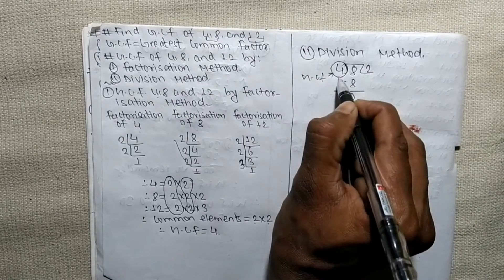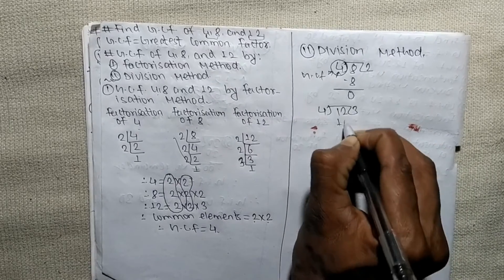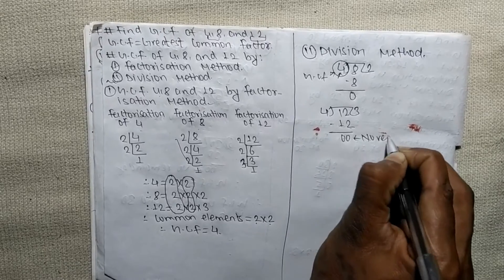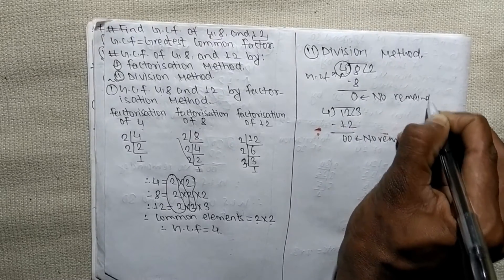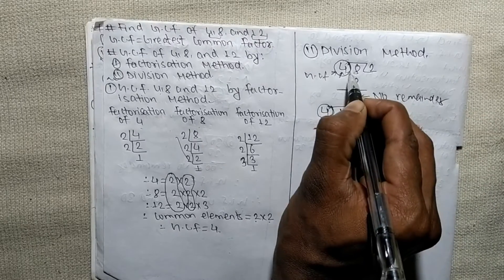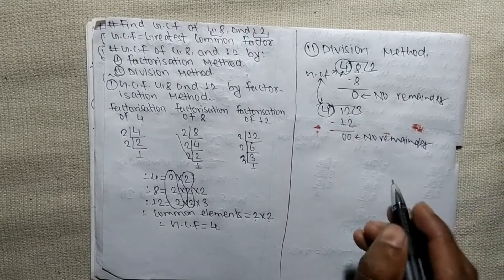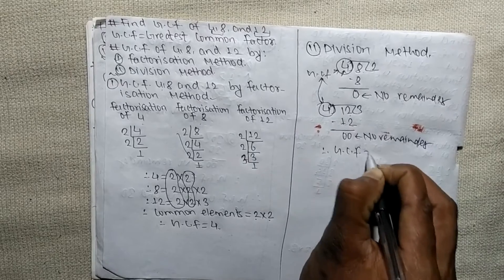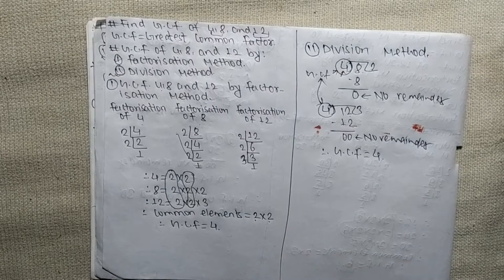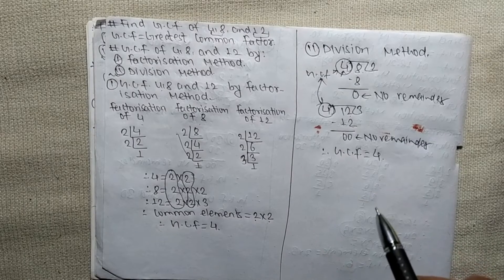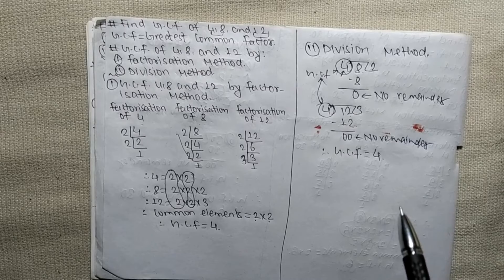Our third number is 12, so we divide 12 by 4 as well. That is 4 × 3 = 12, so again there is no remainder. Since 4 leaves no remainder in both 8 and 12, we keep dividing the divisor with the remainder until there is no remainder at last. The divisor that leaves no remainder becomes the GCF by the division method.